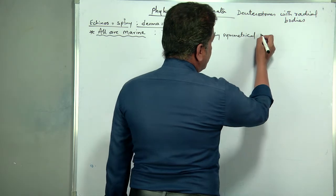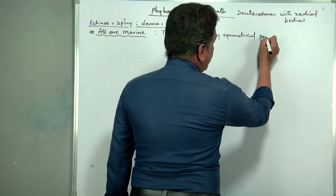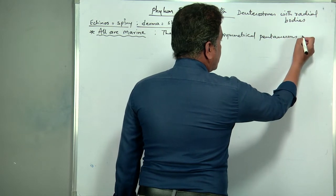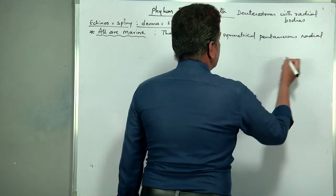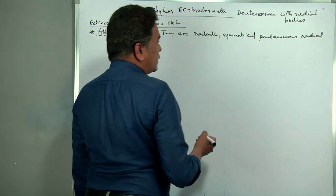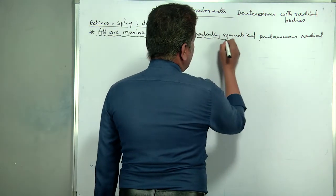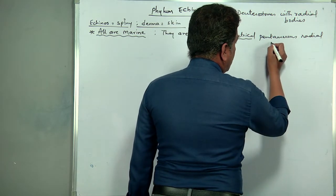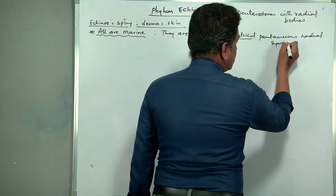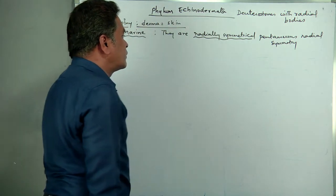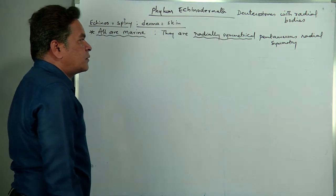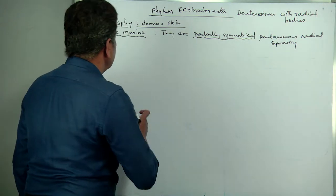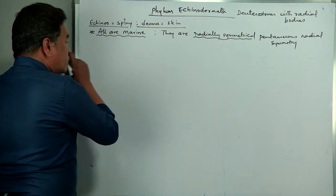Echinoderms are radially symmetrical — specifically pentamerous radial symmetry. Their body has five parts and their symmetry here is pentamerous radial symmetry. All are marine — a very important character.